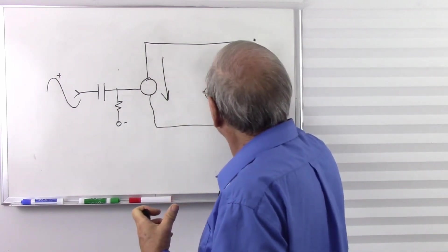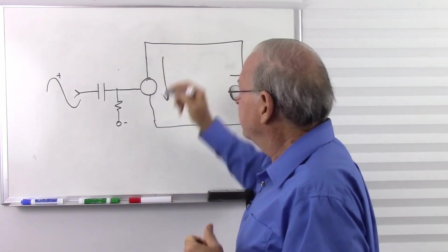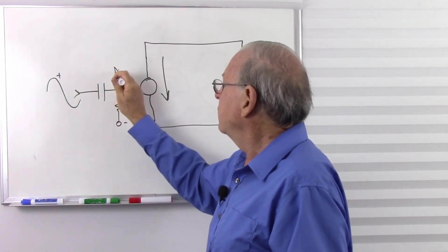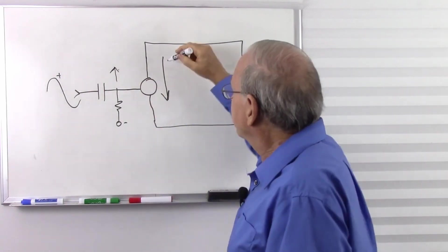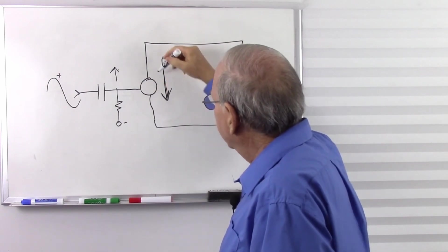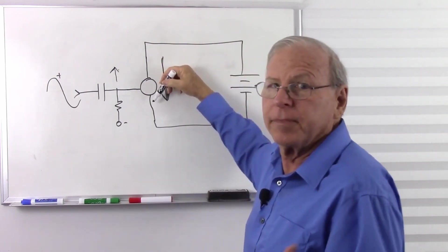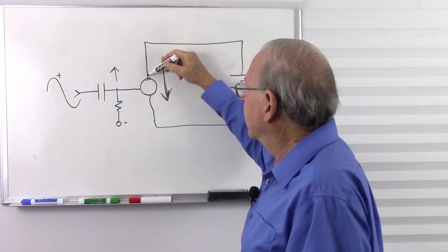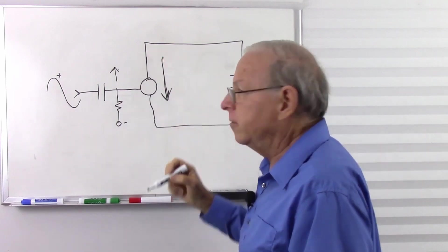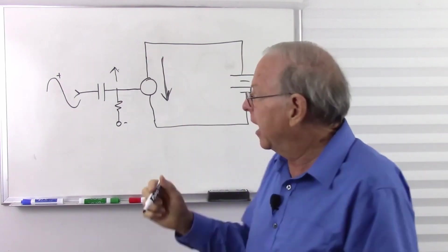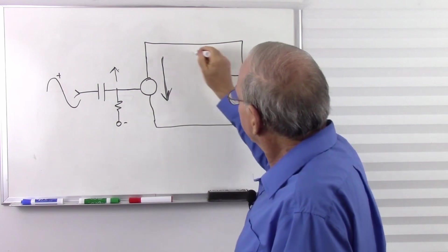Well, I'm just using conventional current. More positive, higher voltage on the grid means more current from the plate to the filament or from the anode to the cathode because conventional current goes anode to cathode. So there we go. Conventional current.